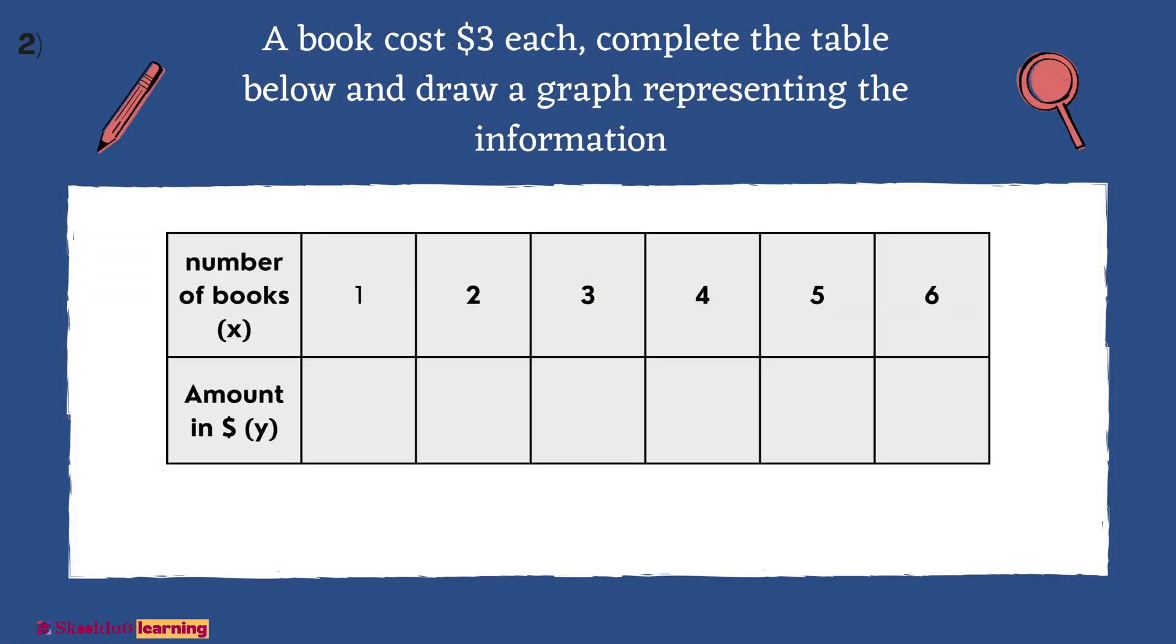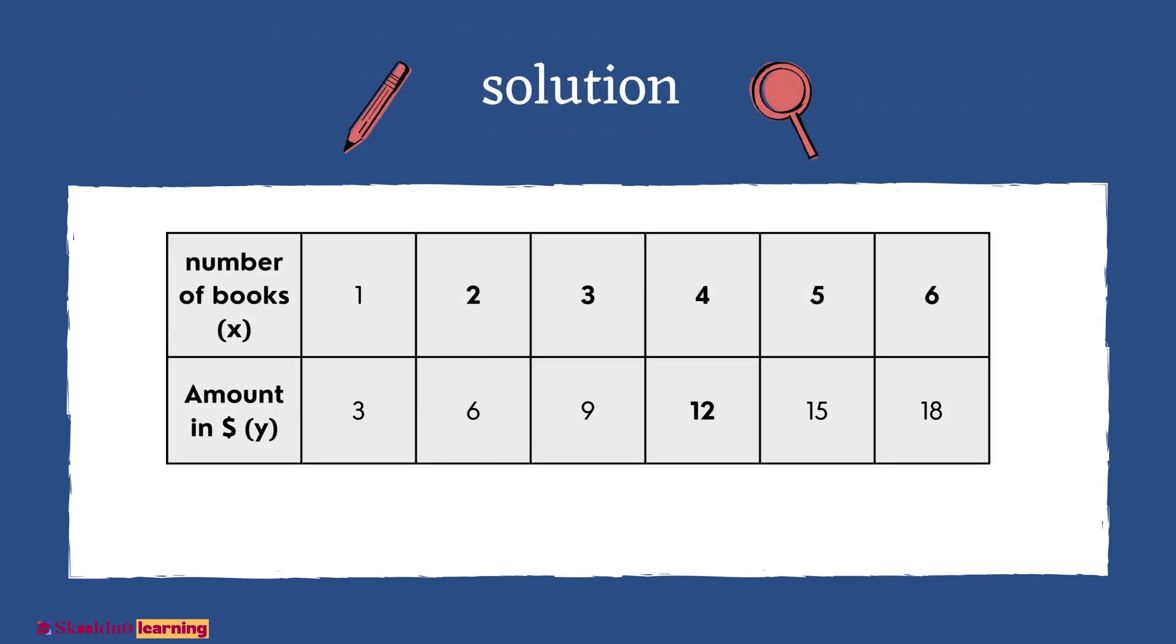Example number 2. The cost of each number of books is by multiplying the number of books by $3.